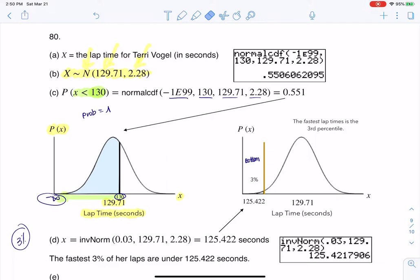So when I give you that percentile, then you go ahead and you plug in the percentile, mean and standard deviation, and you find out that the fastest 3% of her laps were under 125.422 seconds or lower.